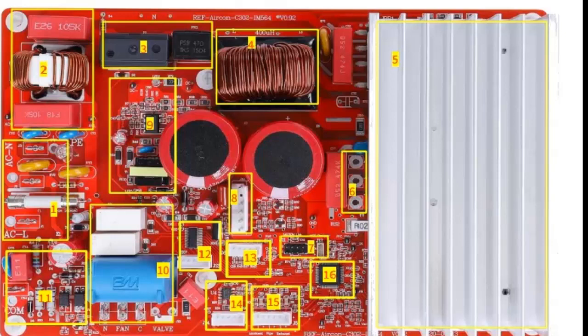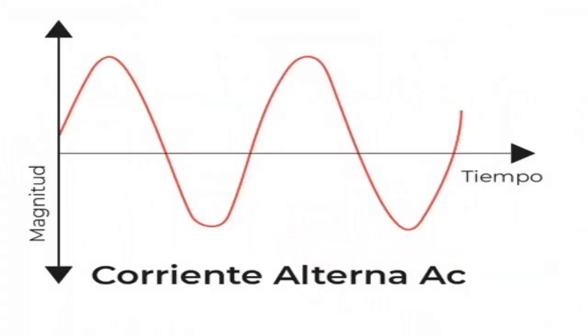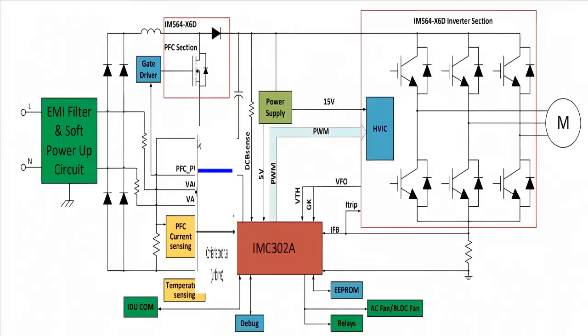On the screen, the Intelligent Power Module of an Inverter Air Conditioner Electronic Board is displayed. This electronic module receives single-phase alternating current from the external power grid and internally converts it from alternating current to direct current through the diode bridge. It manages the voltage of the new current through the PFC circuit.